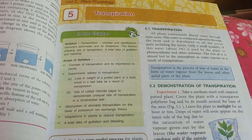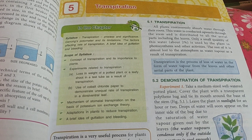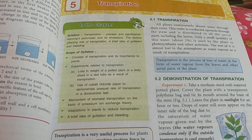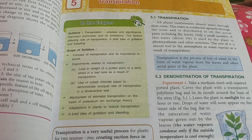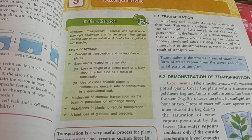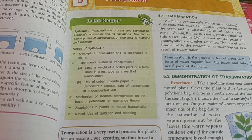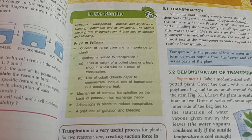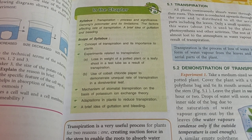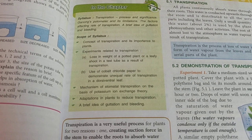Greetings everyone. We will start the chapter on transpiration today. In this chapter we will be studying about the process of transpiration and its significance. We will learn about a few methods of measuring transpiration, one such apparatus being Ganon's potometer. We'll also learn about its limitations, as well as the external and internal factors affecting the rate of transpiration, and compare the two processes guttation and bleeding.